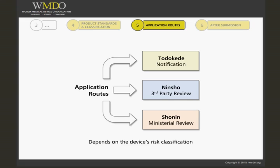The TODOKEDE is the most straightforward and will require little extra work. The NINSHO and SHONIN are a little more complex, and there are several more routes within those routes for which your submission can take. It sounds complex, so let us review each route.